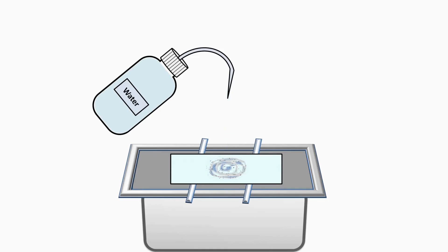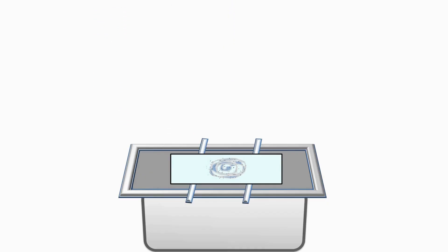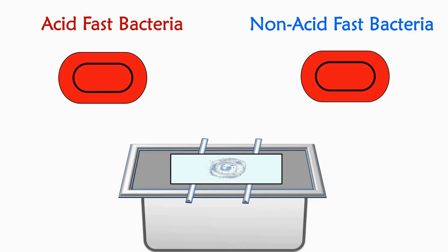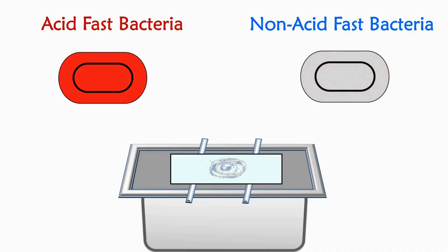The acid-alcohol solution decolorizes non-acid-fast bacteria. After the decolorization step, non-acid-fast bacteria lose the red color and become colorless, whereas there is no effect of acid-alcohol on acid-fast bacteria. The acid-fast bacteria retain the red color even after the decolorization step.